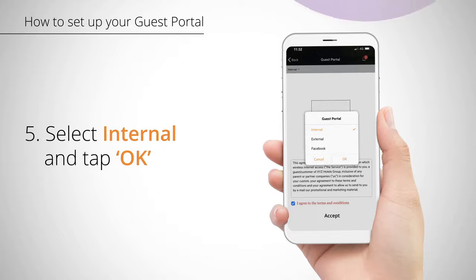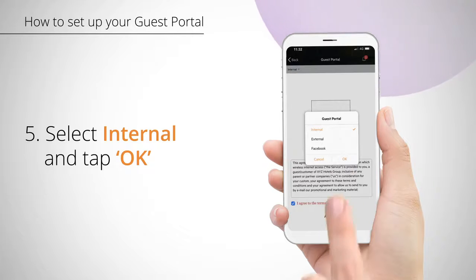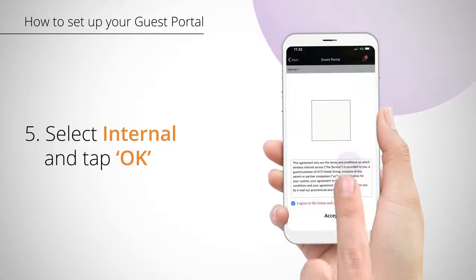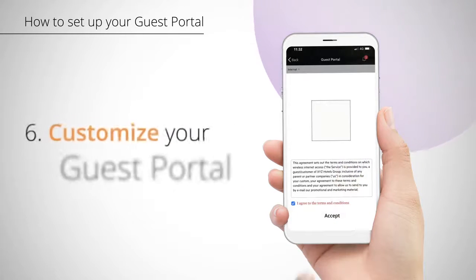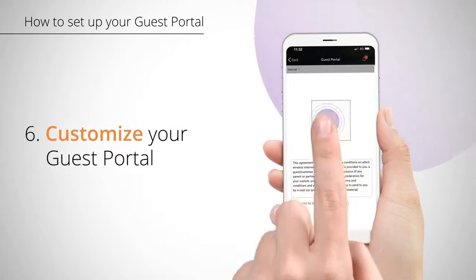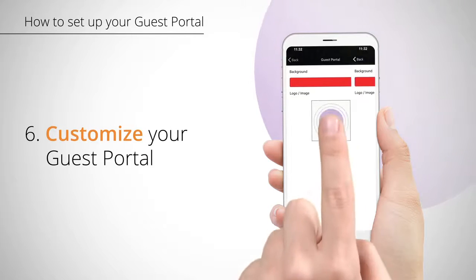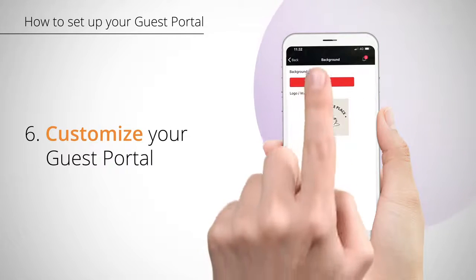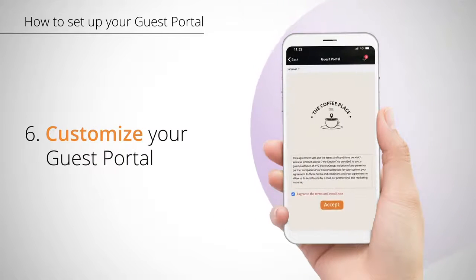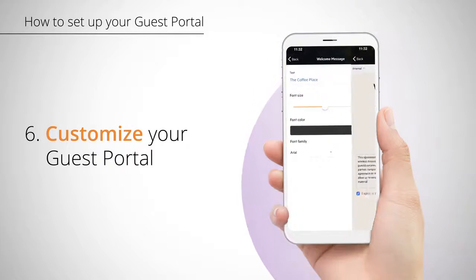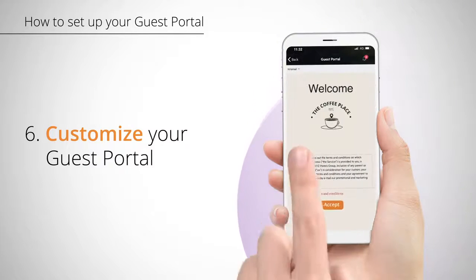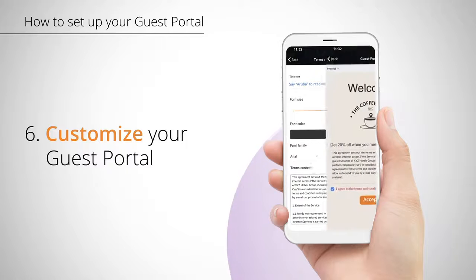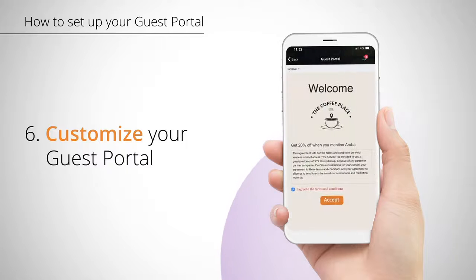We're going to select Internal Portal, so we can create a custom welcome screen. Then, click OK. Simply click on the different areas you want to customize. Add your own logo or images. Tailor the wording. Even offer a promotion. Make it your own.